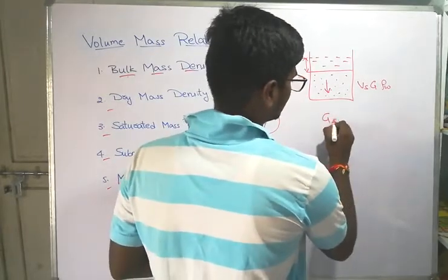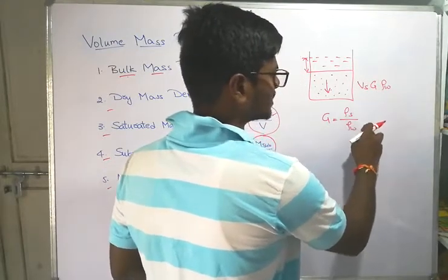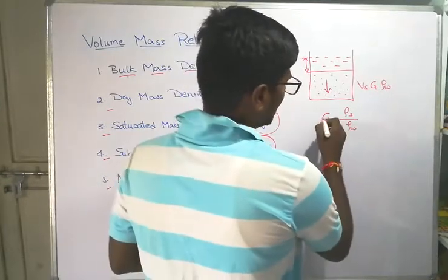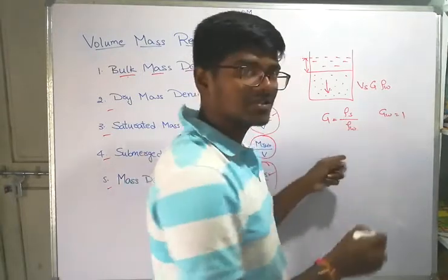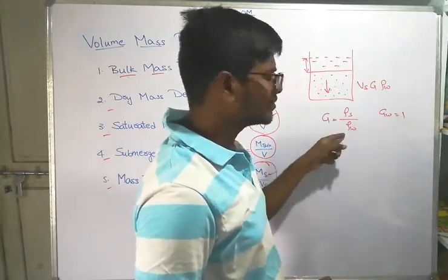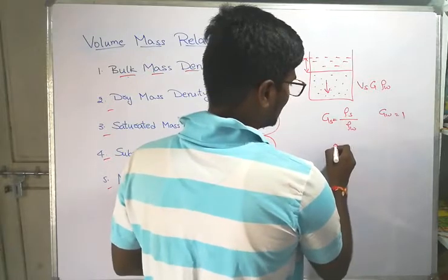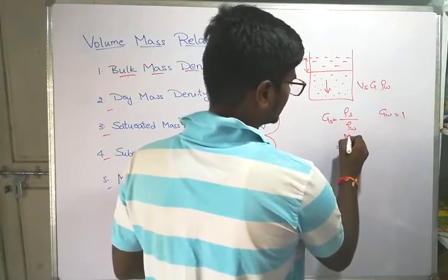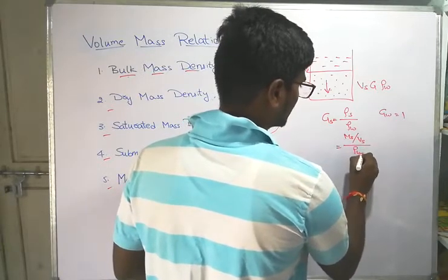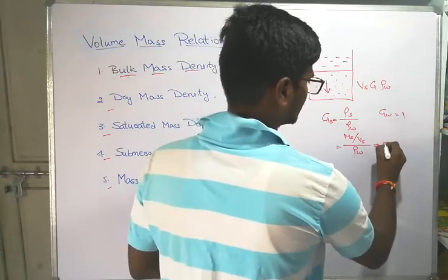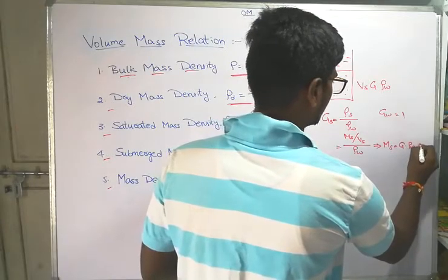The specific gravity formula is: G_s = rho_s / rho_w — that is, the density of the soil divided by the density of water. The specific gravity of water G_w equals 1. Therefore, rho_w is the standard reference fluid. From this, ms = G × rho_w × Vs.